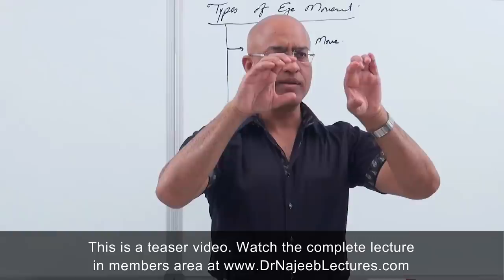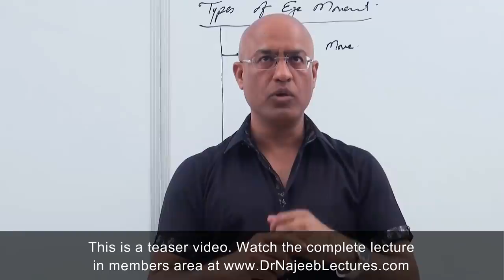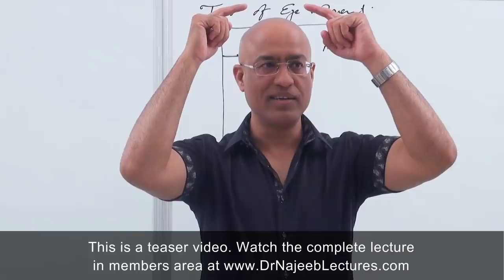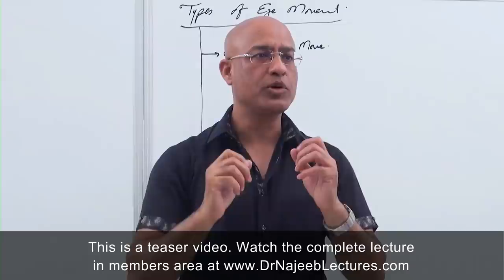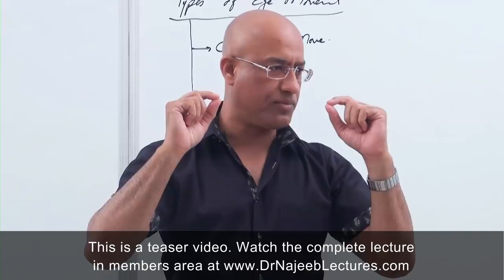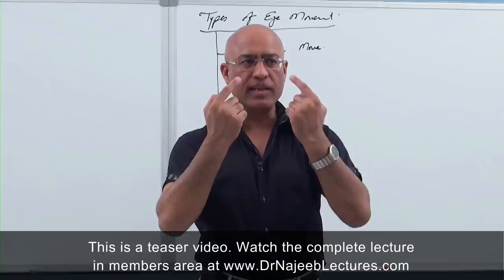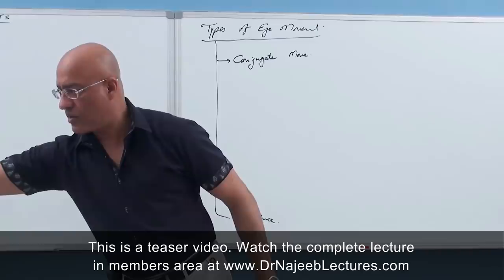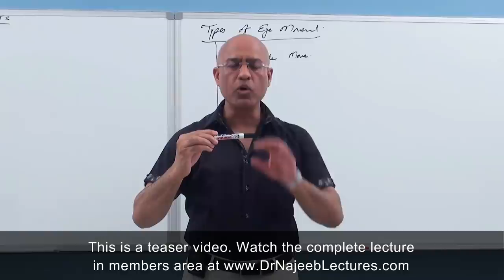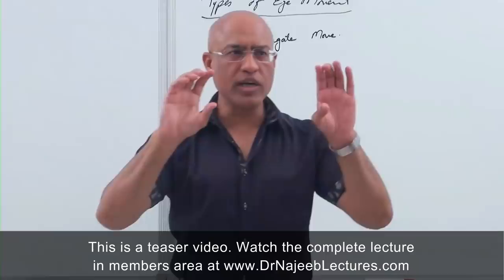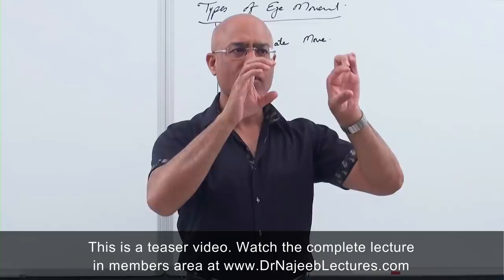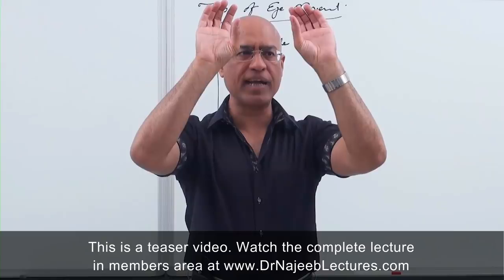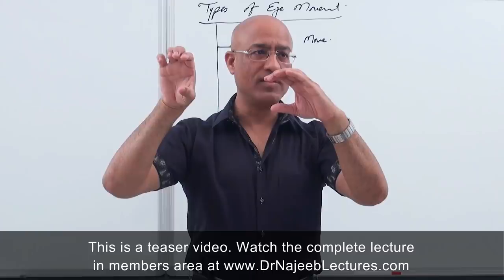Conjugate movement can be in the horizontal axis or in the vertical axis. If I am looking at the roof, both eyes should move upward. The most sensitive point in the retina for image building is the fovea centralis — when we focus on an object, we are placing the image exactly on the fovea. So if an object is up, both eyeballs move upward; if down, both move down.